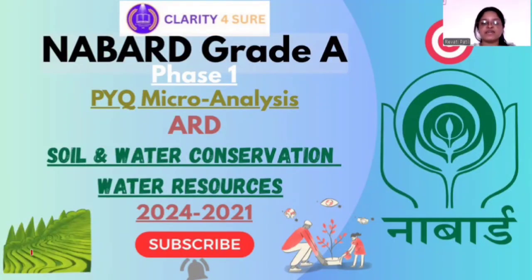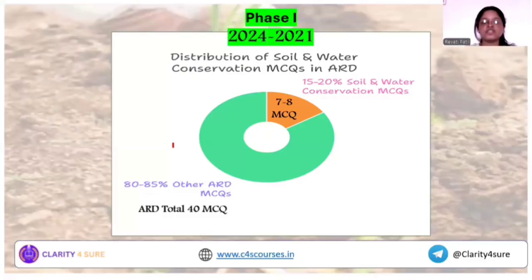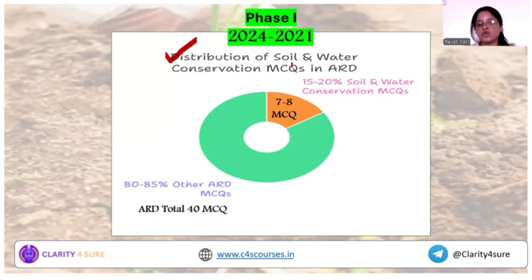Hello everyone, I welcome you to PYQ microanalysis series for NABARD Grade A Phase 1-2 for ARD merit section — agriculture and rural development merit section. Today we are going to do the microanalysis for the soil and water conservation and water resource part of the syllabus.